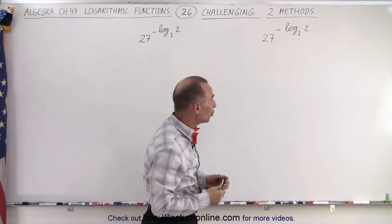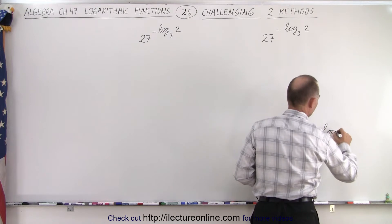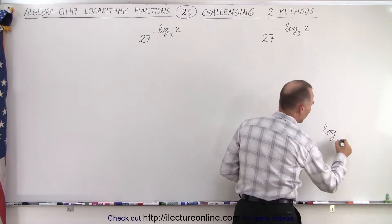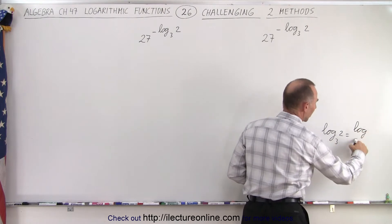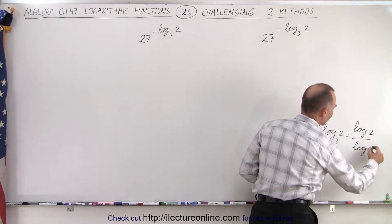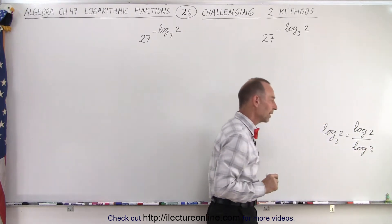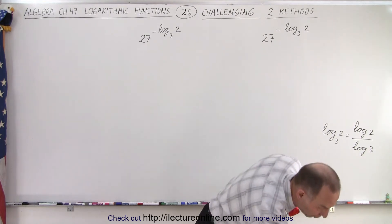We have log base 3 of 2. So what we can do here is on the side, we can say the log base 3 of 2 is equal to the log base 10, the common log, of the number 2 divided by the log base 10 of the old base 3. And we can take the log of 2 and divide by the log of 3 and get a number.